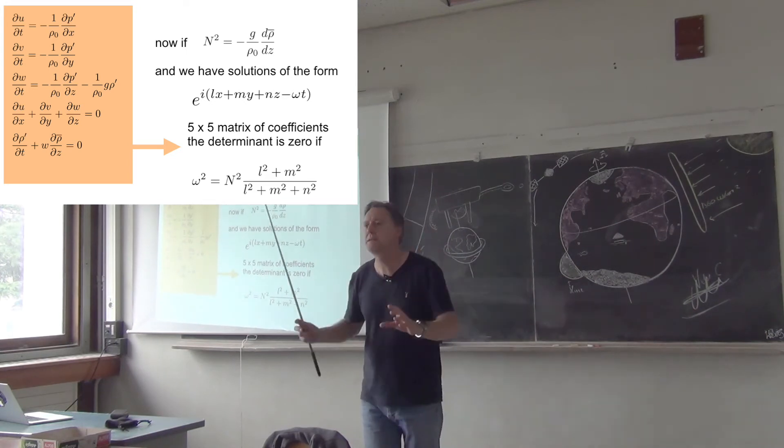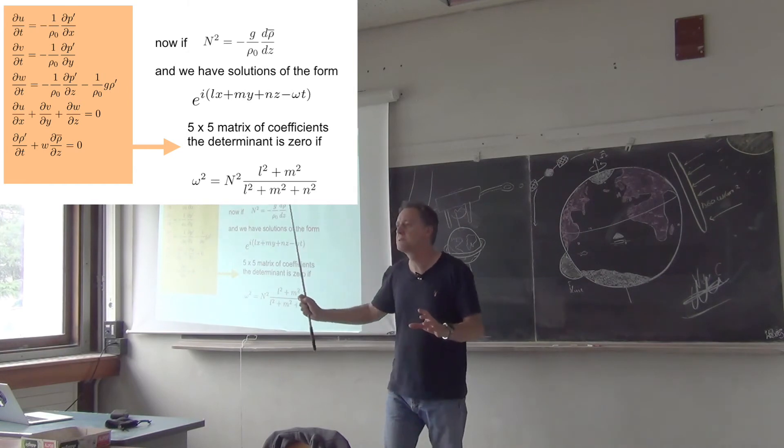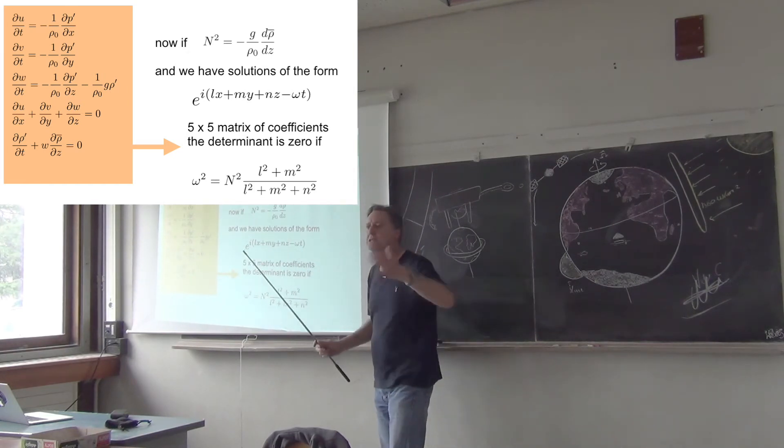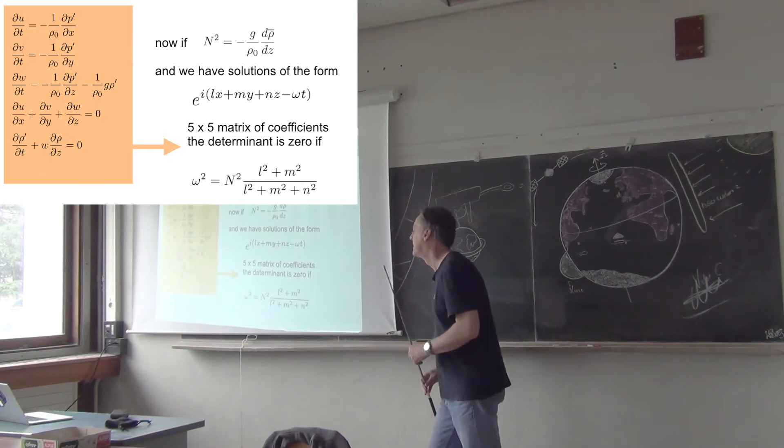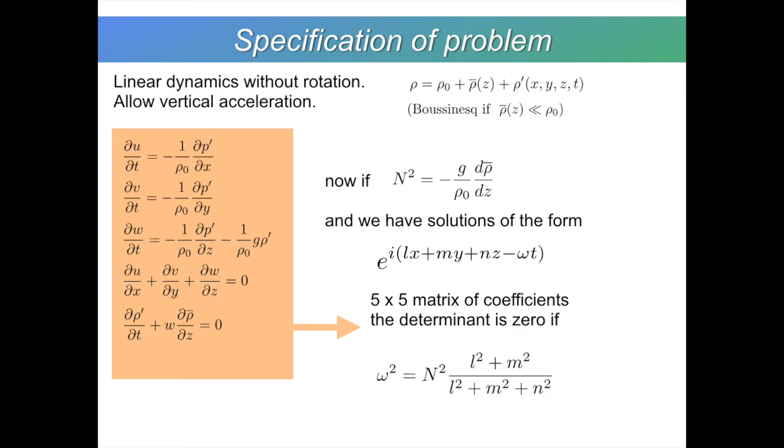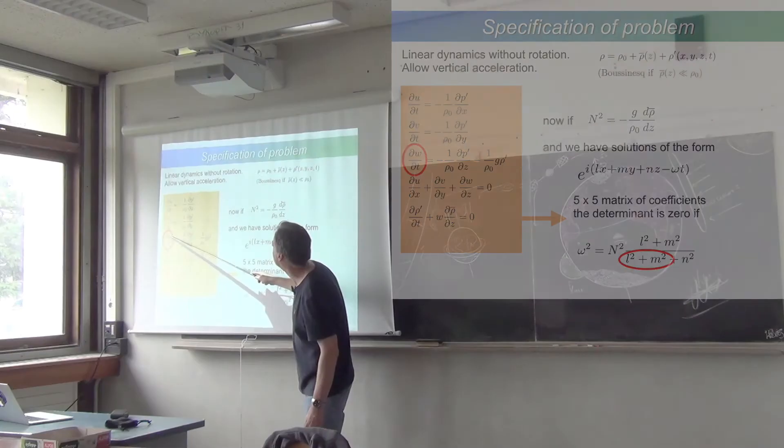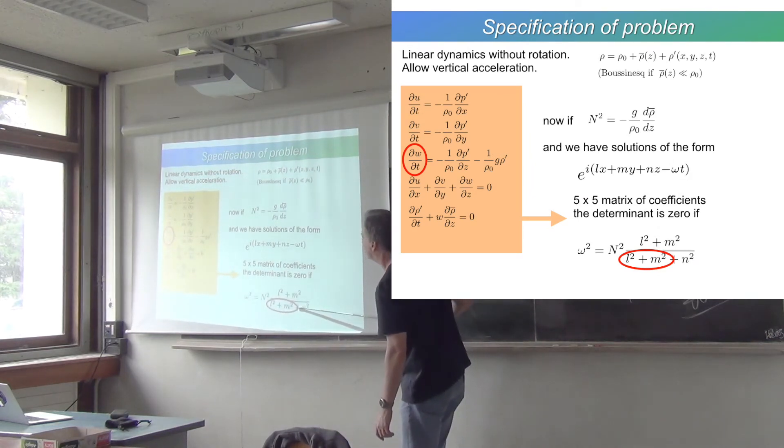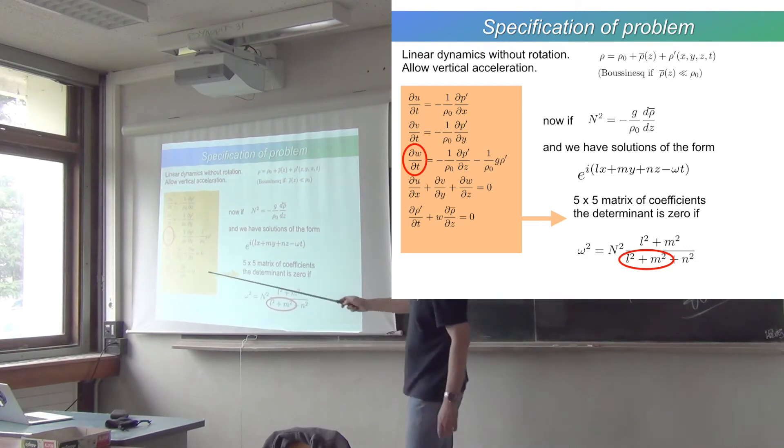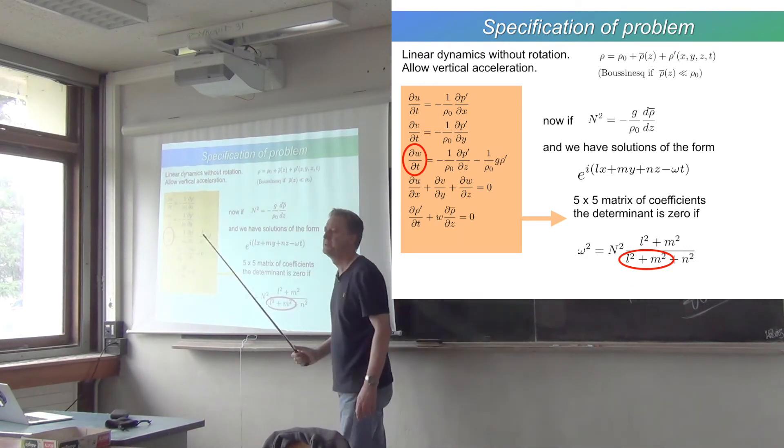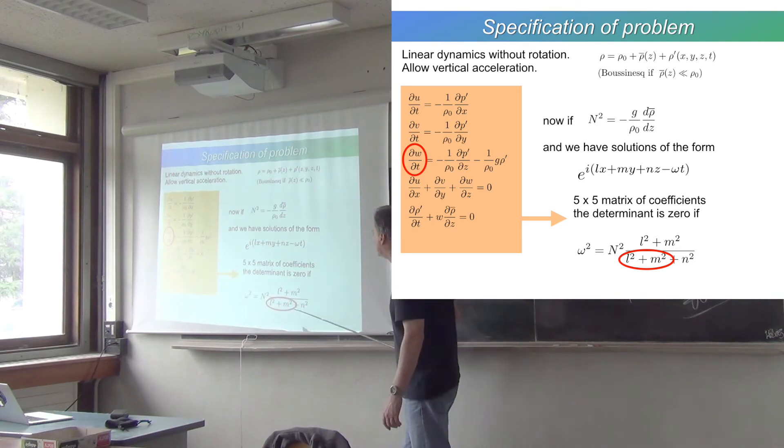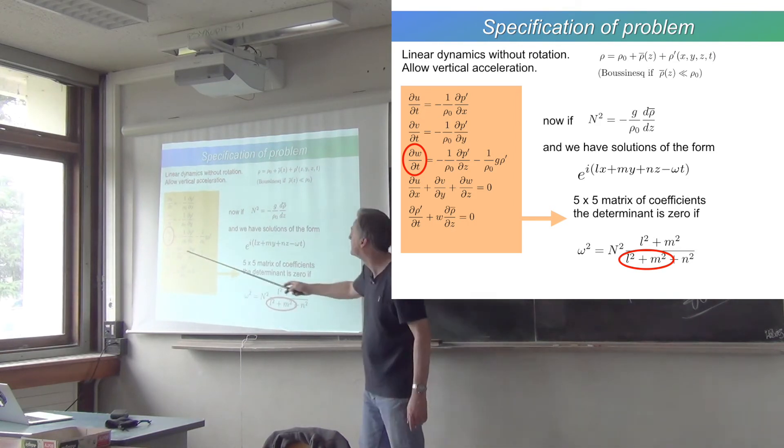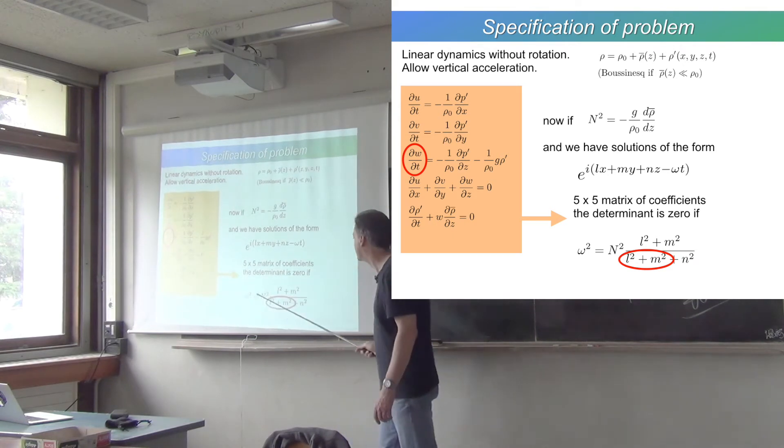The condition for having non-trivial solutions to that is that the determinant of that five by five matrix is zero. So, you just find the determinant of that matrix, set it equal to zero, and do a few pages of algebra, and you get this. This is the dispersion relation for internal waves, and I've just marked that this, the non-hydrostatic term, leads to this part of the denominator. If you cross that term out, this will disappear.